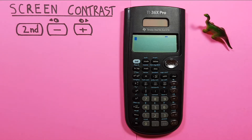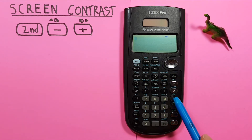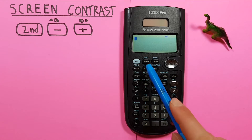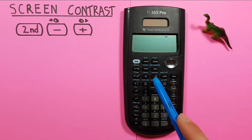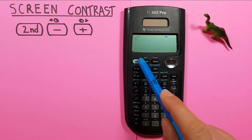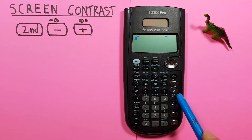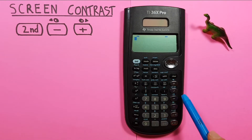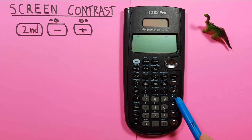For example, if you want to reduce the contrast on your screen you would use the second function and subtraction key. You press second function, subtraction, second function, subtraction, and you would keep pressing these and your screen would get lighter and lighter.